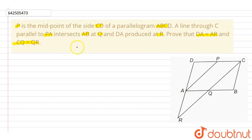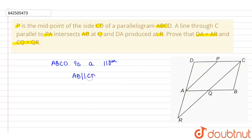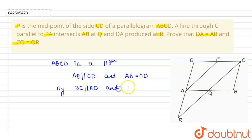In the adjacent figure, ABCD is a parallelogram. So AB is parallel to CD and AB is equal to CD. Similarly, BC is parallel to AD and BC is equal to AD, because it is a parallelogram.